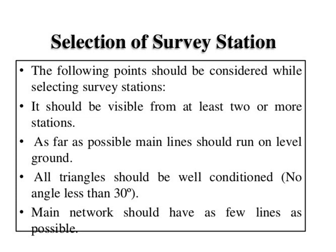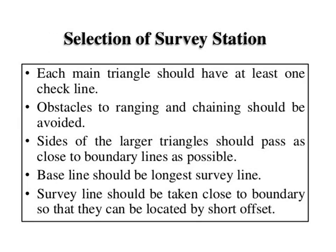When selecting survey stations: they should be visible from at least two or more stations; main lines should run on leveled ground; all triangles should be well-conditioned with no angle less than 30 degrees; the main network should have as few lines as possible; each triangle should have at least one check line; obstacles to ranging and chaining should be avoided; sides of larger triangles should pass close to boundary lines; the baseline should be the longest survey line; and surveying lines should be close to boundary lines so they can be located by short offset.